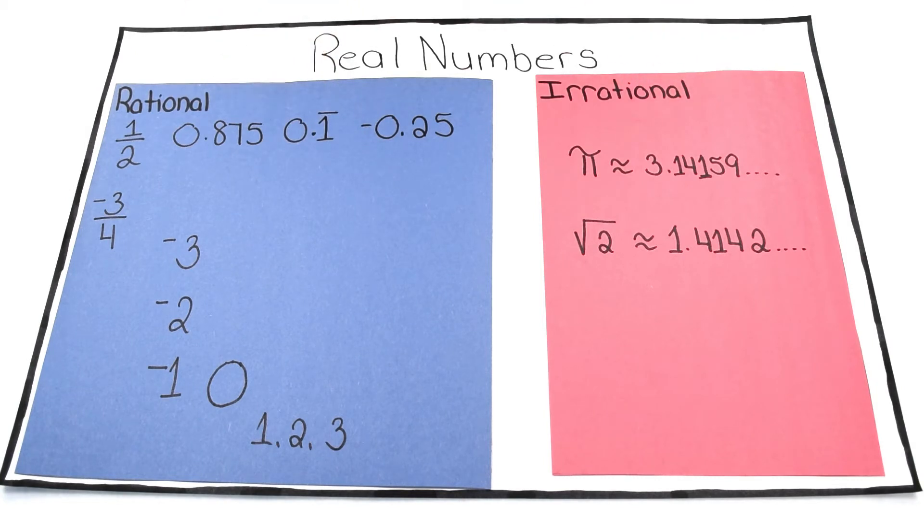Irrational numbers, on the other hand, are those real numbers that can't be expressed as the ratio of two integers. These include decimal values that don't repeat or terminate, such as pi, and the square root of values that aren't perfect squares.